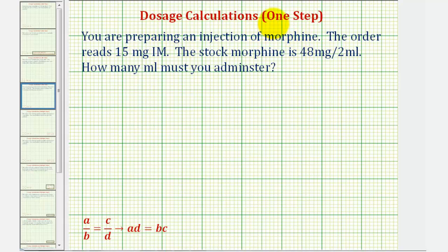Welcome to a one-step dosage calculation. You are preparing an injection of morphine. The order reads for 15 milligrams IM. The stock morphine is 48 milligrams per two milliliters. How many milliliters must you administer?